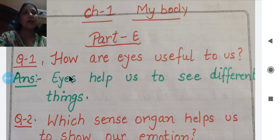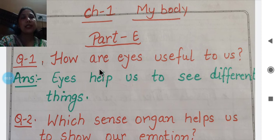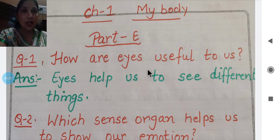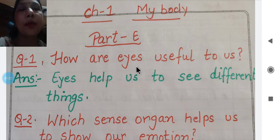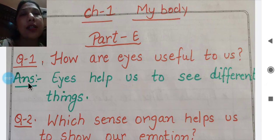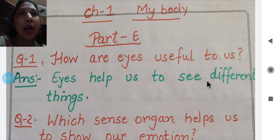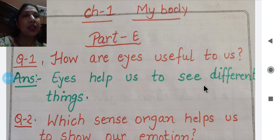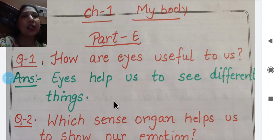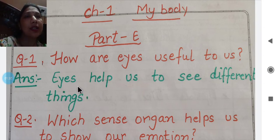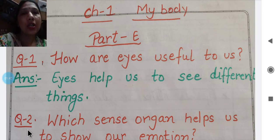First question is: how are eyes useful to us? Eyes हमारे किस काम आती हैं? Answer is: eyes help us to see different things. Different things को देखने में eyes काम आती हैं। You can see things outside, on the ground, or at home - all with the help of eyes.